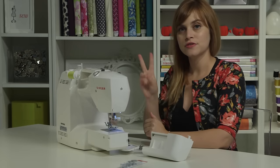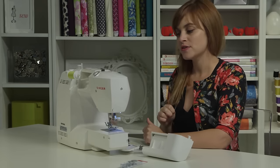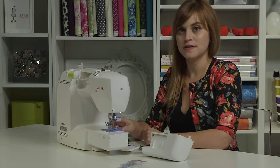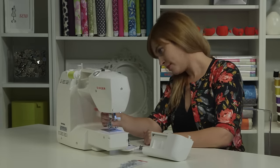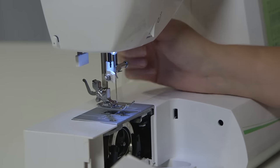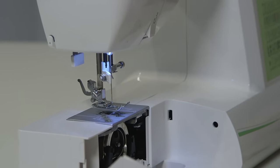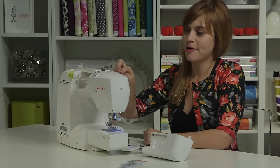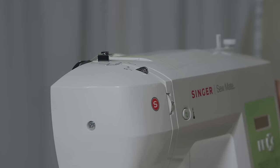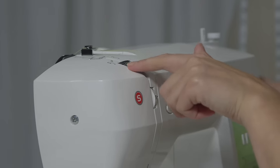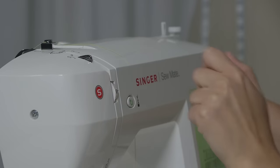Before you thread the upper thread, there's two things that you want to check. The first is that you want to make sure the presser foot is up. So remember, there's a lifter, a little white lever right here that lifts and lowers the presser foot, so make sure that that is up. The second thing you want to check is the take-up lever. We need to actually thread the take-up lever. We need to make sure that that is up all the way in the highest position so we can see it and access it to thread it.